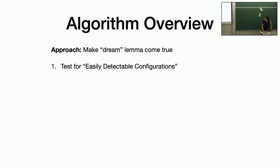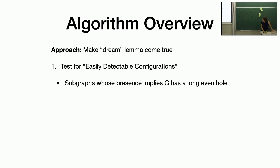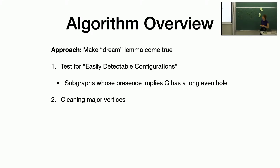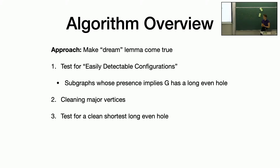The approach: the first thing we do is test for easily detectable configurations, which are subgraphs that contain long even holes and that we can search for in polynomial time. Since they contain long even holes, we can assume the graph doesn't contain any of them, and that gives us a bit more structure to work with. Then we get rid of major vertices through a process called cleaning. Once we have no major vertices and no easily detectable configurations, we can actually prove that the dream lemma is true, and we can test for shortest long even holes by enumerating every triple of vertices and taking shortest paths between them.